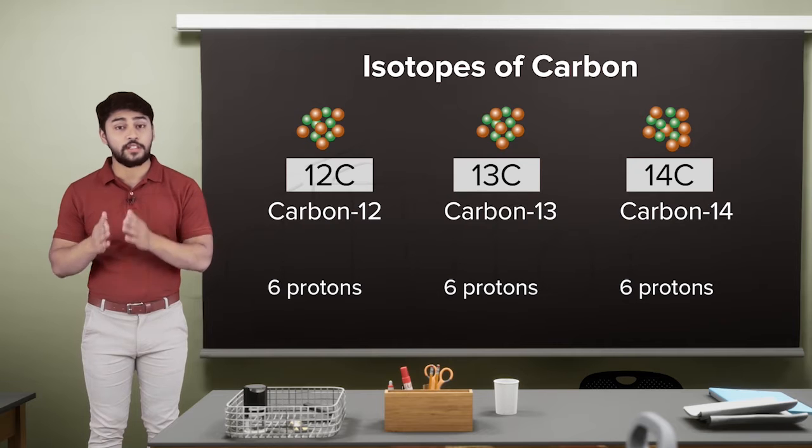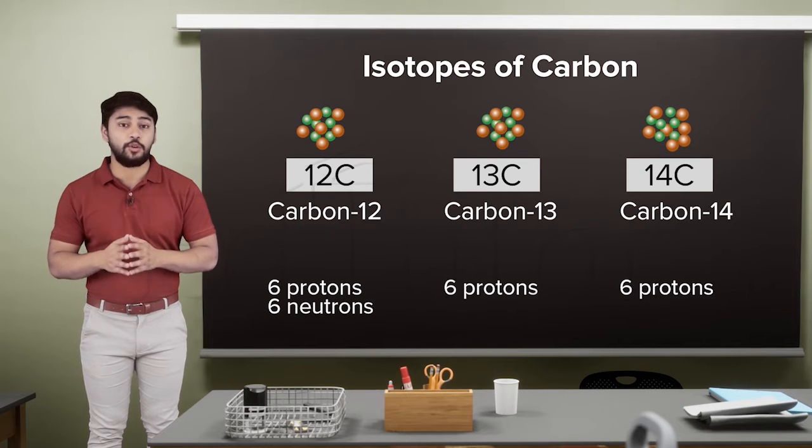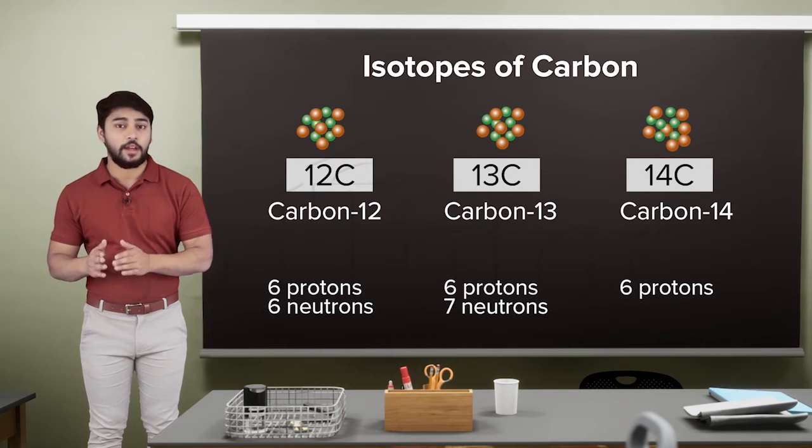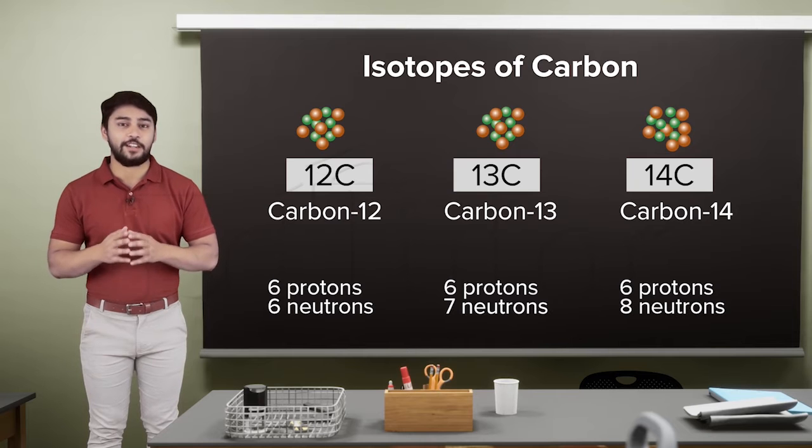In the case of the first isotope, it has 6 neutrons. The next one has 7 and the third one has 8 neutrons.